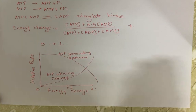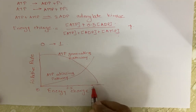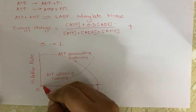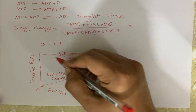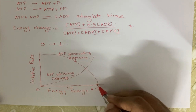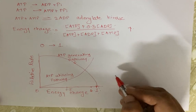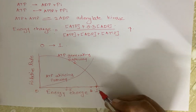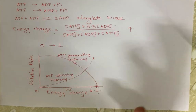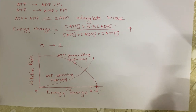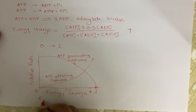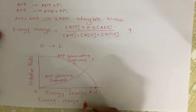From this graph it is clear that when Atkinson's energy charge is 1, the relative rate of the ATP-generating pathway is low, because the cell does not need to prepare more energy. When the energy charge is 1, the ATP-utilizing pathway rate is high because the cell has a lot of energy. This is how energy charge regulates metabolism.